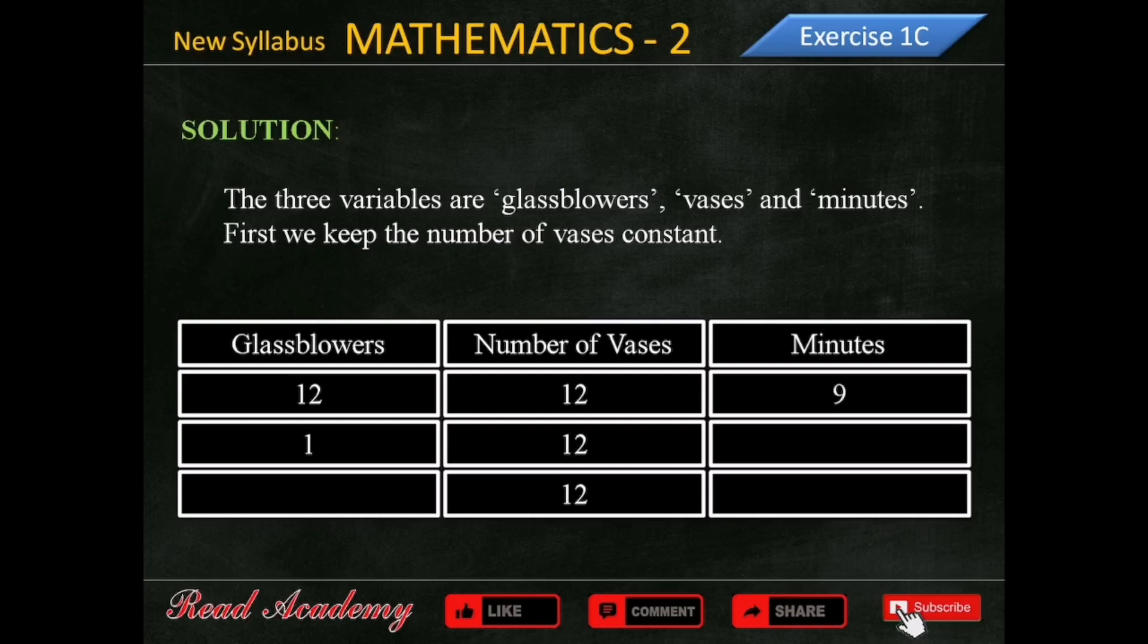Since there's only one glassblower now, it will definitely take longer. So we are going to multiply the minutes by the number of glassblowers. 9 multiplied by 12 equals 108.